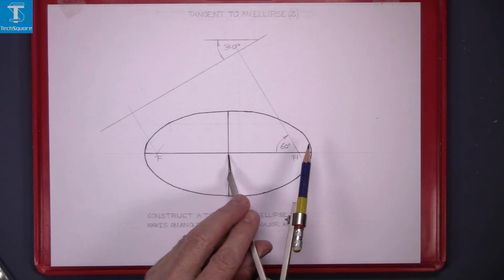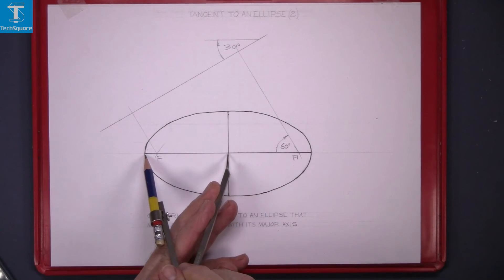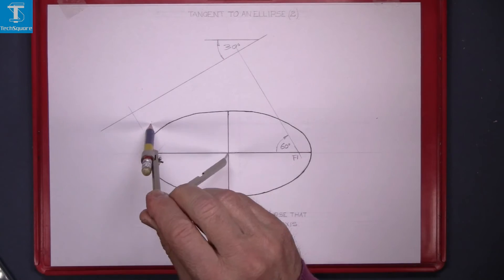Draw in the major circle. Set the compass to half of the major axis and draw your circle.